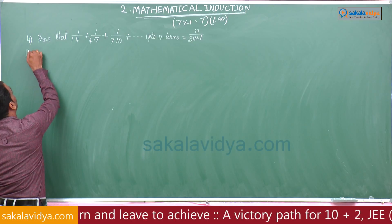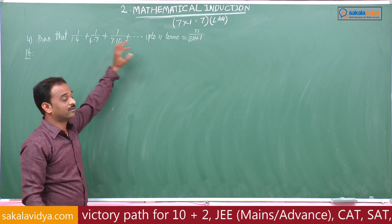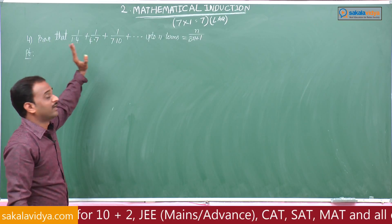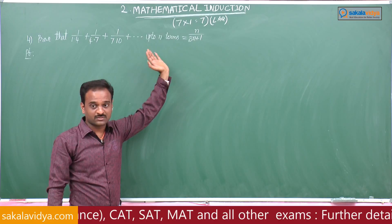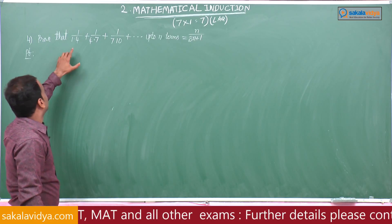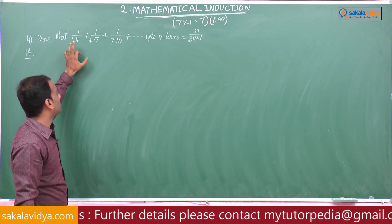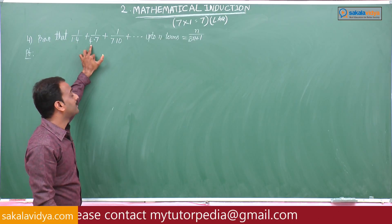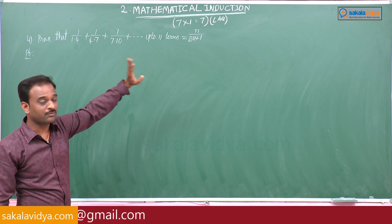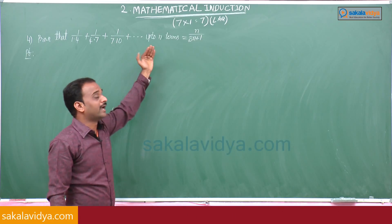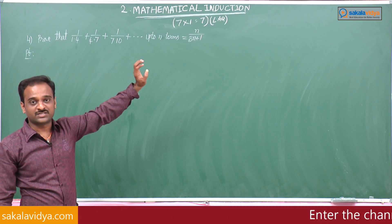Here, if we observe, all the terms have 1 as its numerator. So the nth term numerator is also 1. But the denominators — each term has 2 terms: first term 1×4, second term 4×7, third term 7×10. In the same way, the nth term also has 2 terms in its denominator.